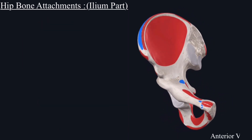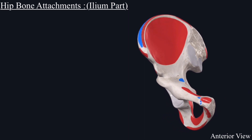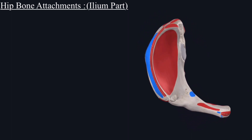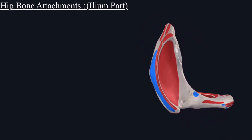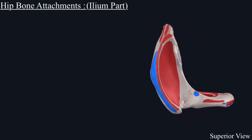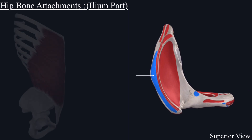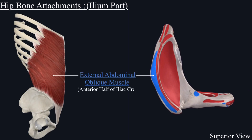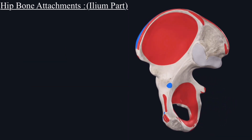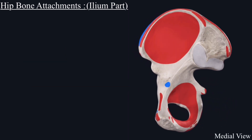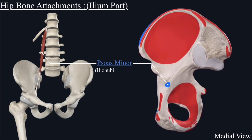Those are the muscles that originate from the ilium part of the hip bone. Next is muscle insertion. Only two muscles are inserted on the ilium part. On the anterior half of the iliac crest is inserted the external abdominal oblique muscle, while on the iliopectineal eminence is inserted the psoas minor muscle.